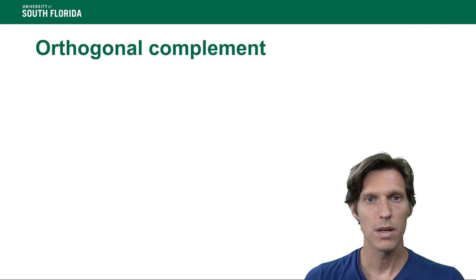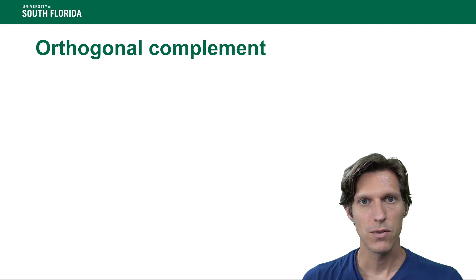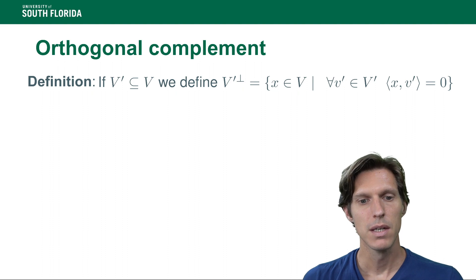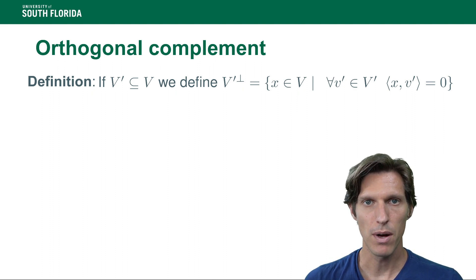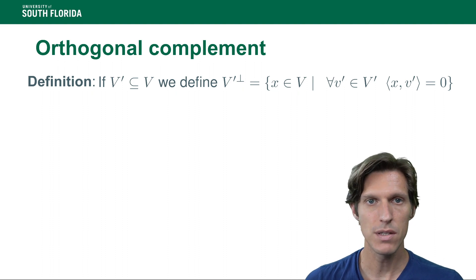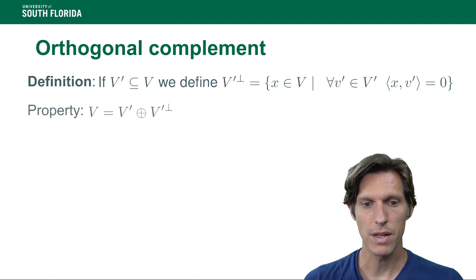Now one notion that's going to be very useful for our orthogonalization process is the notion of orthogonal complement. So a subset V' of V, a vector space, has an orthogonal complement, which is all the x's of V that are orthogonal to every element of V'. We can easily verify that this is a vector space.